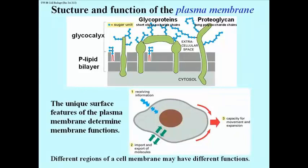Consider any cell — think of it as a blood cell. It has multiple functions based on the proteins that are embedded in the membrane. Some proteins are receptors for receiving chemical signal information, as shown as number one on this slide.